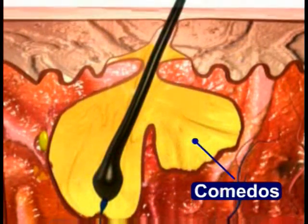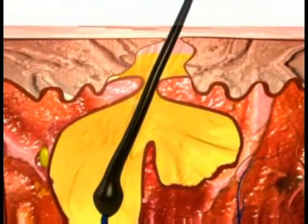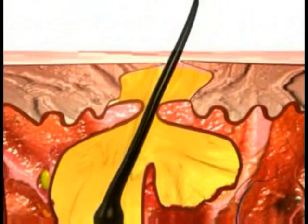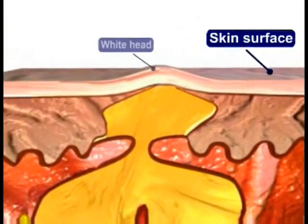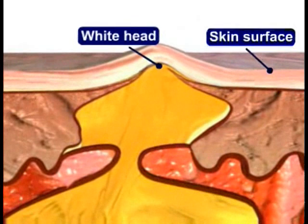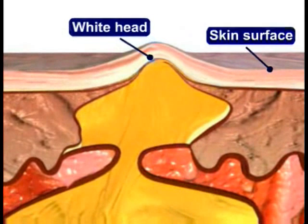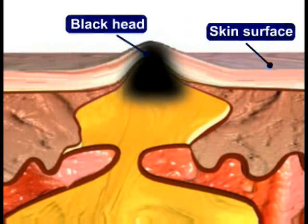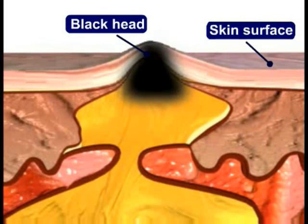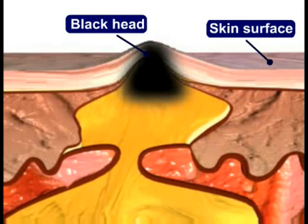There are two types of comedo: whiteheads and blackheads. When the sebum and bacteria stay below the skin surface, a whitehead is formed. A blackhead occurs when the trapped sebum and bacteria partially open to the surface and turn black due to melanin, the skin's pigment.